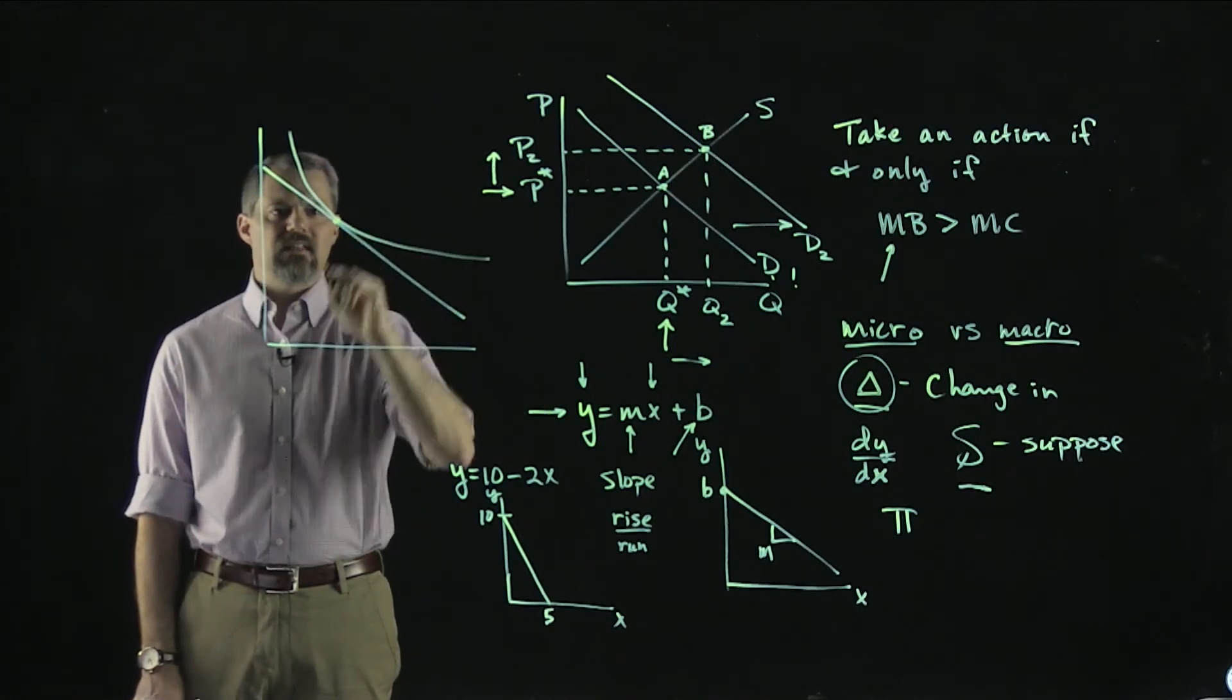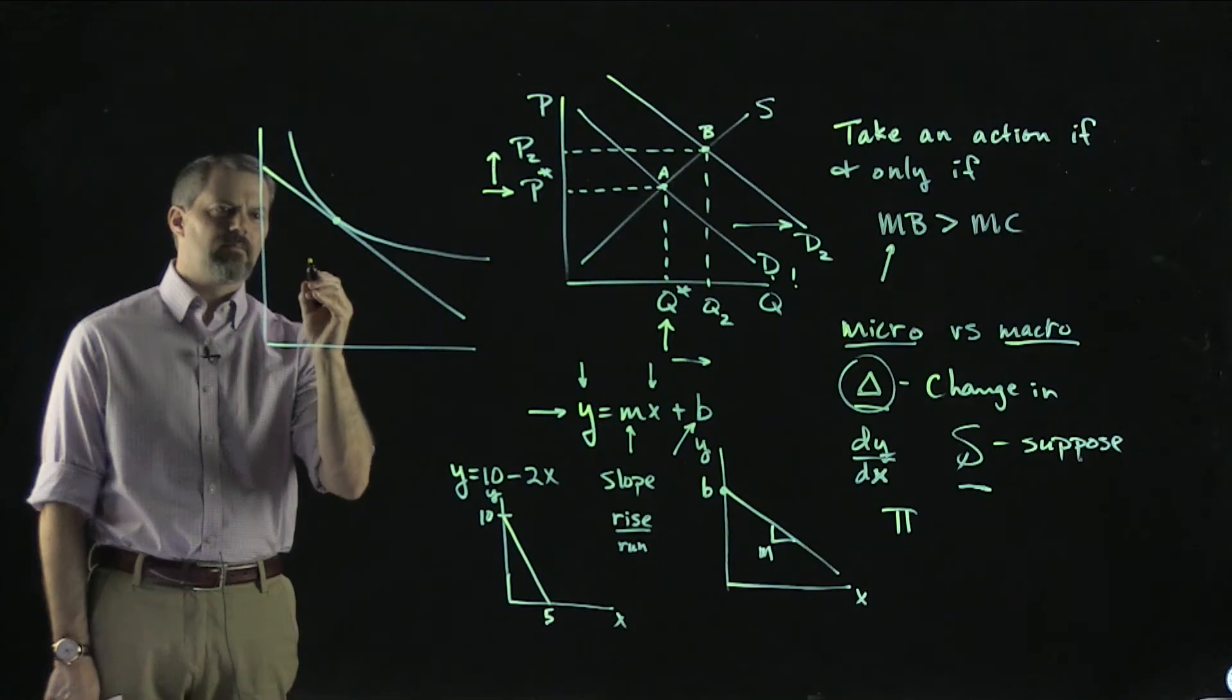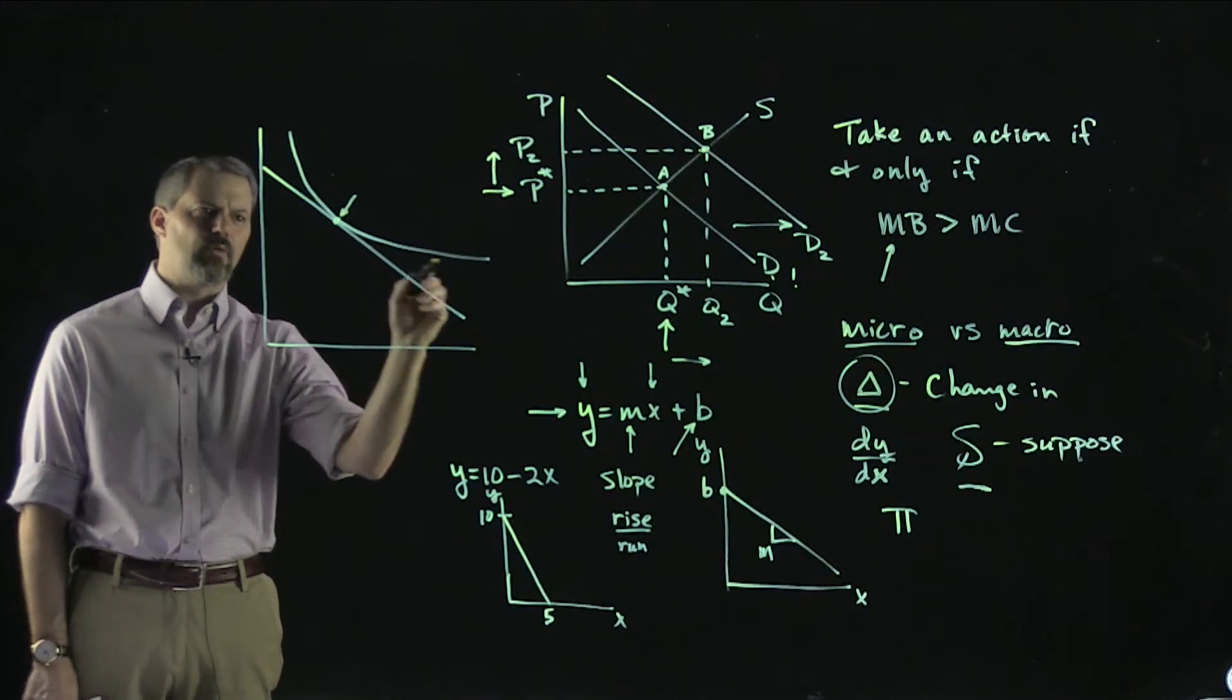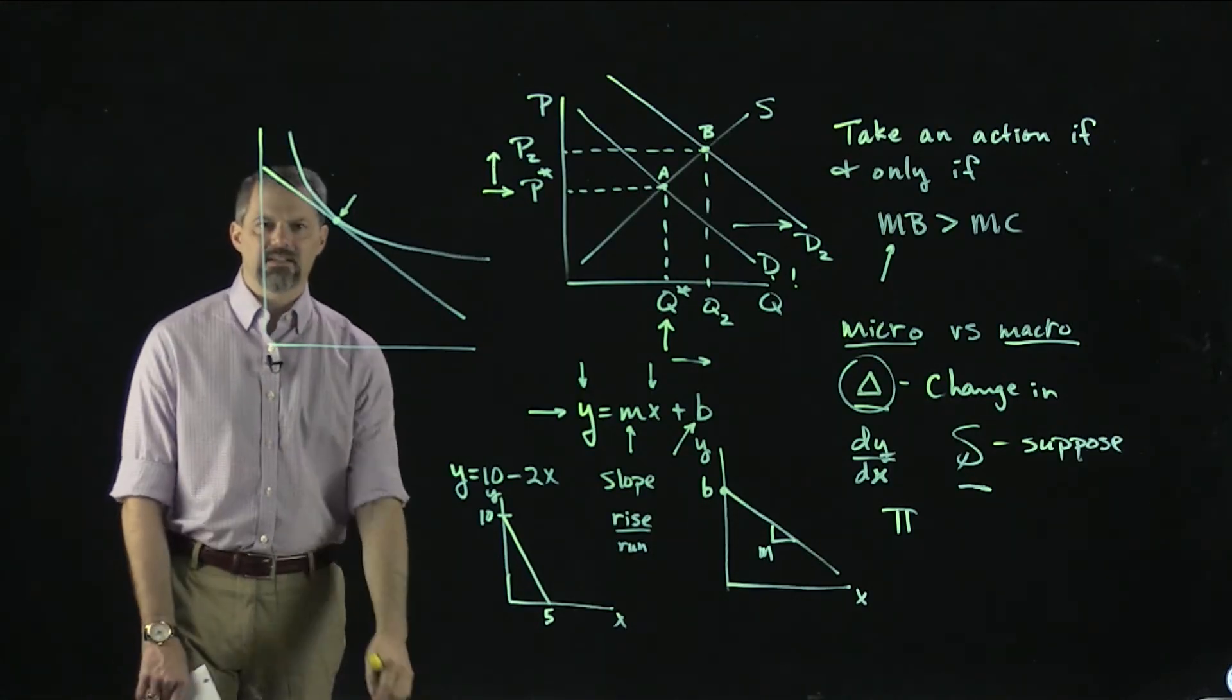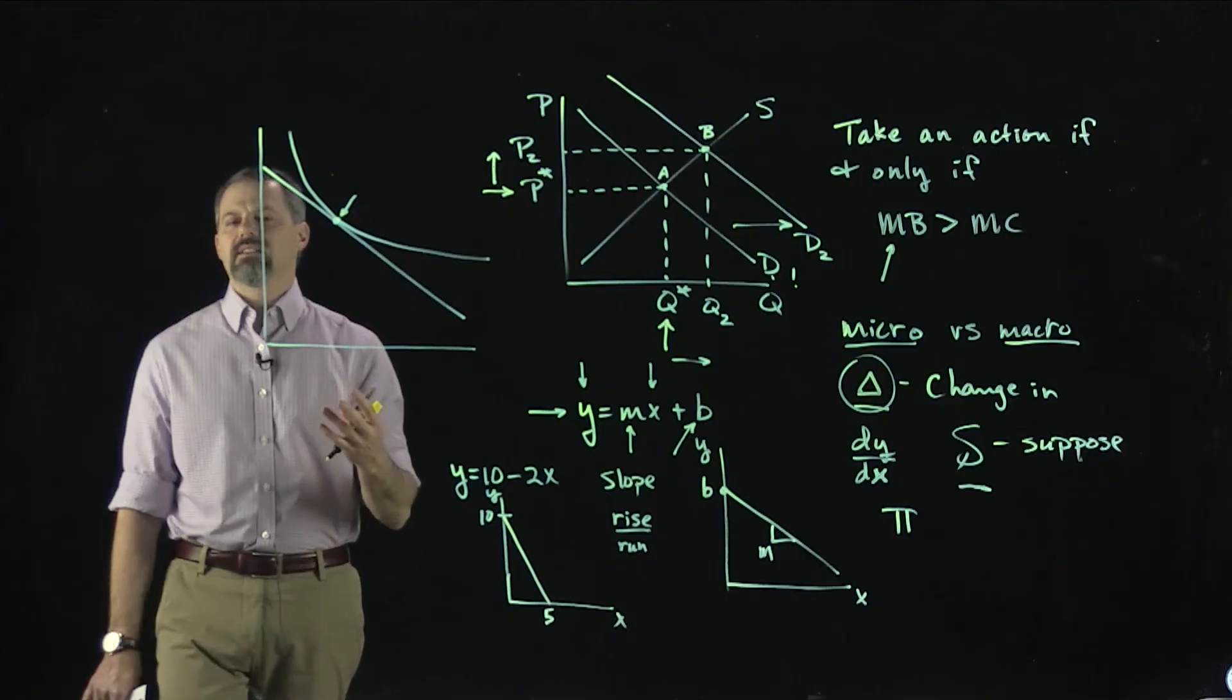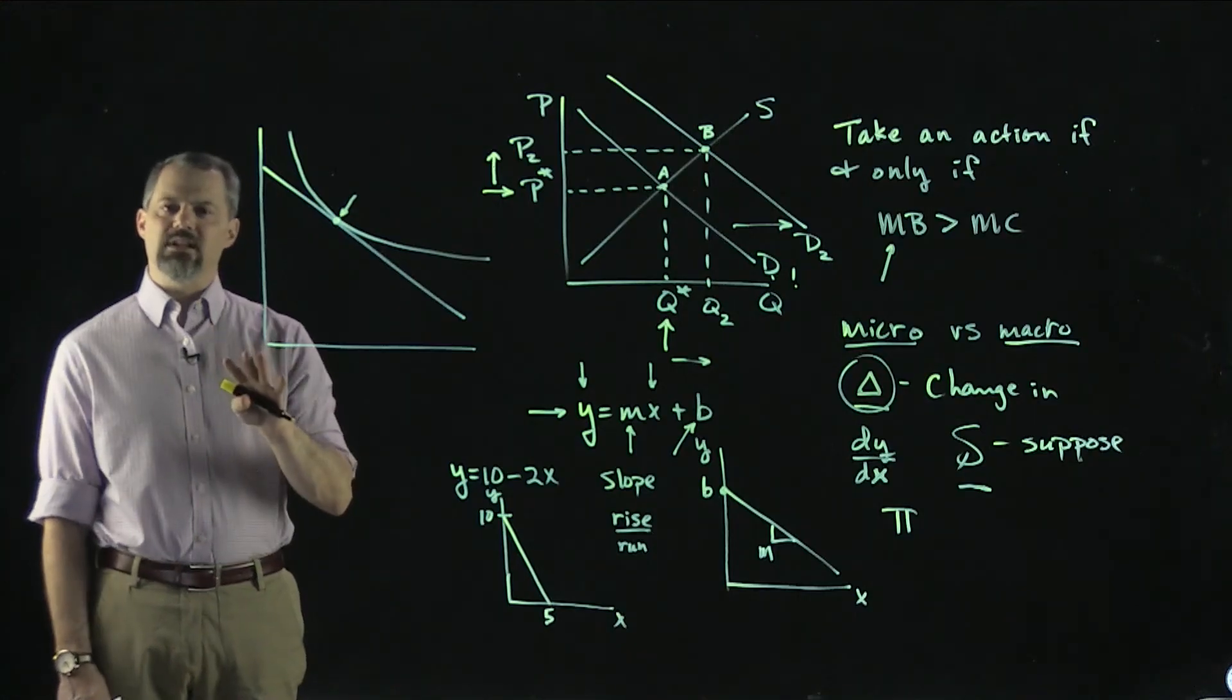At that point, the slope of this line and the slope of that curve are going to be equal, at exactly that point. At any other place, we can see that the slopes are not going to be equal. The place you would have seen this, and we'll review this towards the end of the semester, is in the context of monopolistic competition.